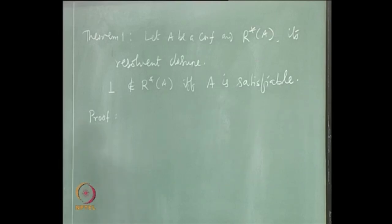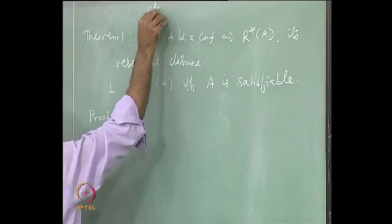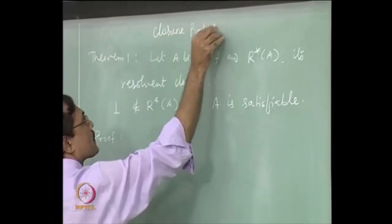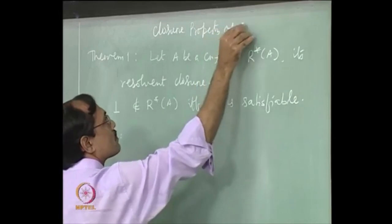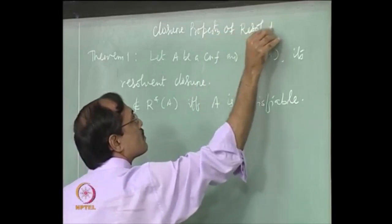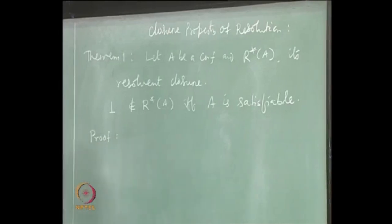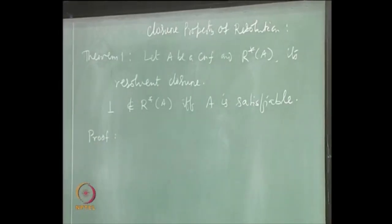This result is called the closure property of resolution. In some sense it is closed — once bottom is there, you know something; if bottom is not there, you also know something. So that way everything is done. That is why it is called the closure property of resolution. In some sense, this is also the soundness and completeness of resolution.